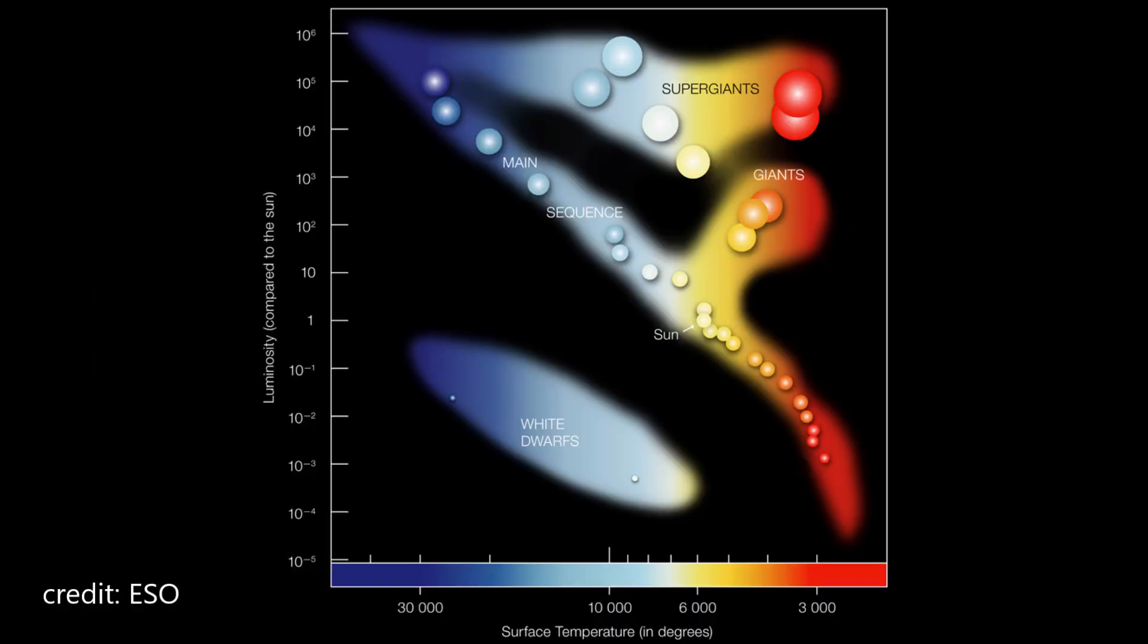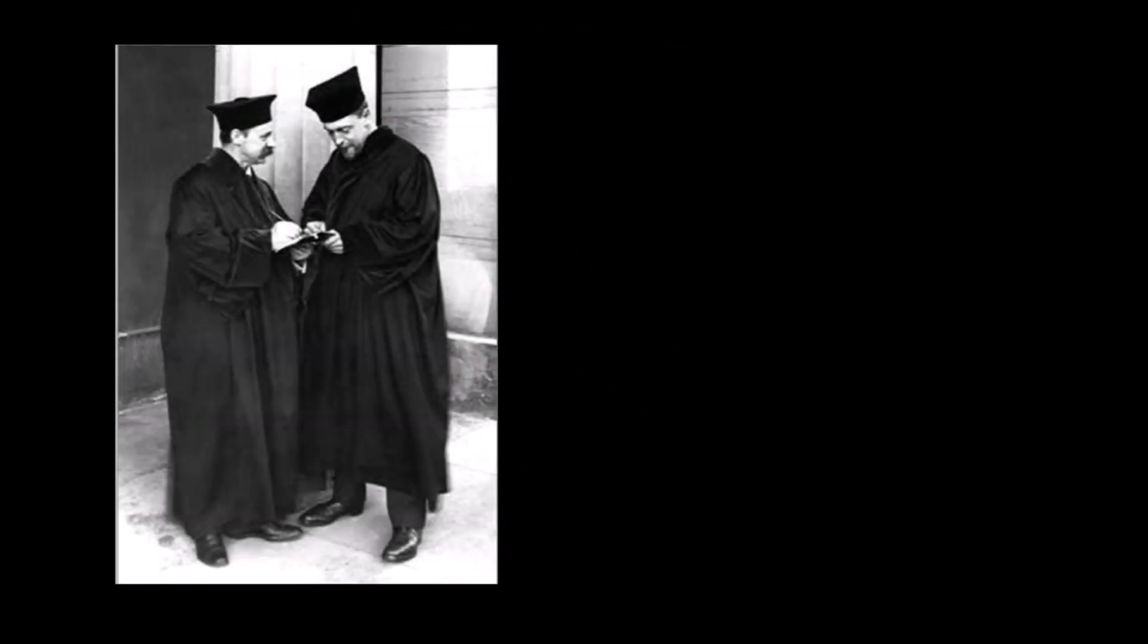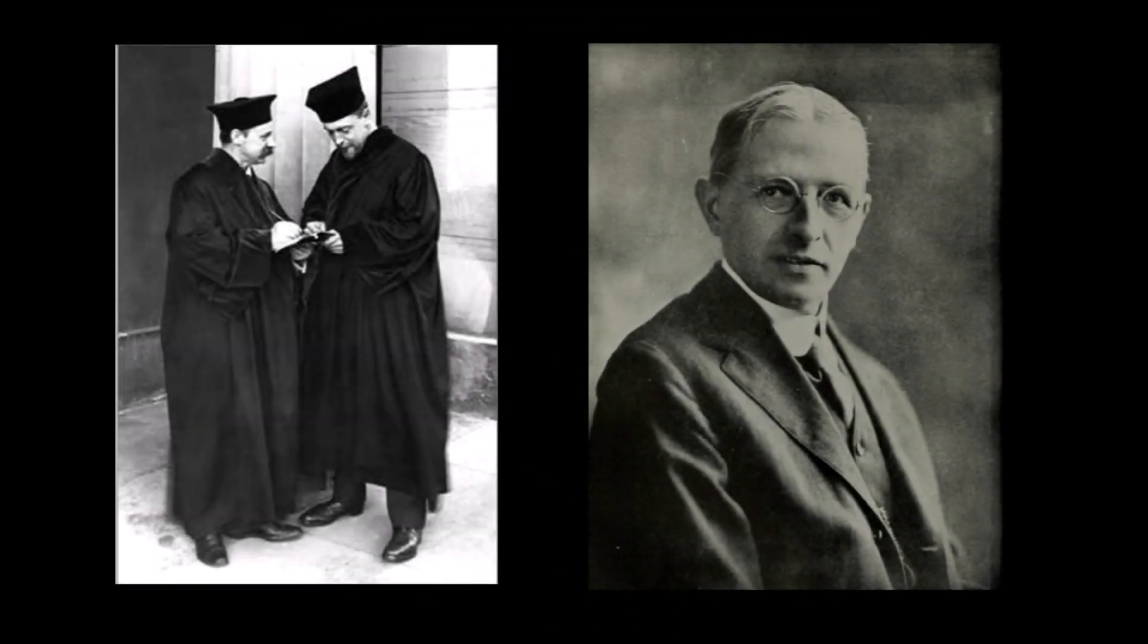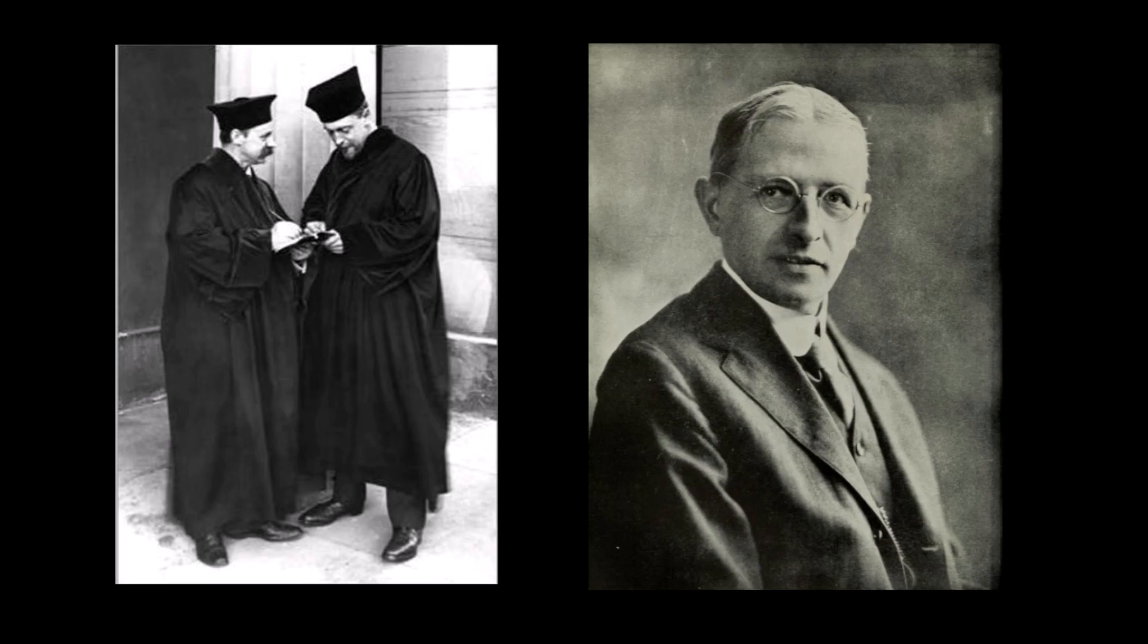Moving on, let's take a look at the Hertzsprung-Russell, or HR, diagram. It is a powerful tool for understanding the relationships between different properties of stars. The HR diagram allows us to plot the luminosity, or brightness, of stars against their temperature. It was created by the Danish astronomer Ejnar Hertzsprung and the American astronomer Henry Norris Russell in the early 20th century.